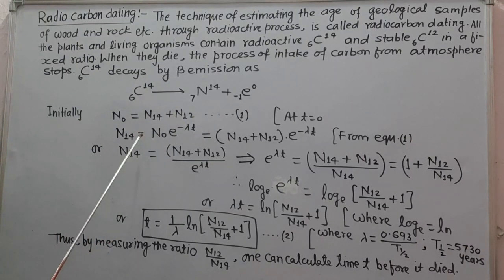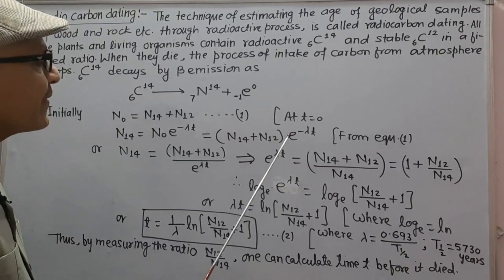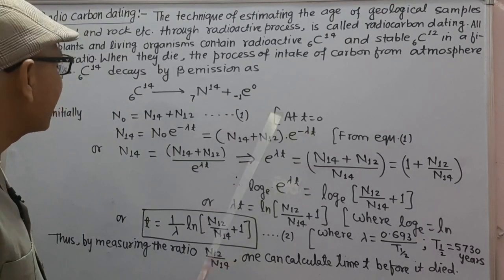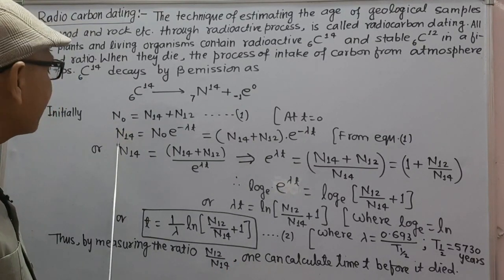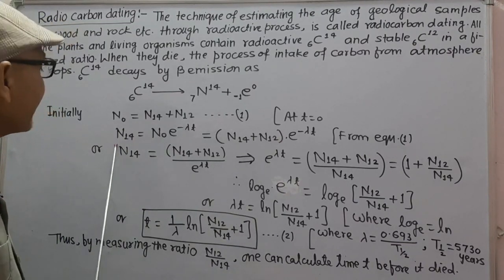Now from decay relation, N14 at any instant t will be equal to N-naught into e to power minus lambda t. N-naught can be put from equation 1, so we get N14 plus N12 into e to power minus lambda t equals N14.